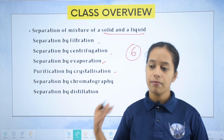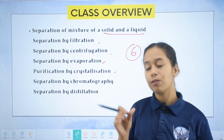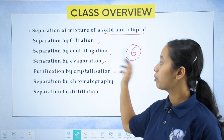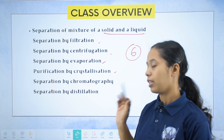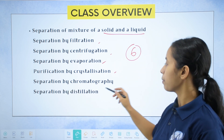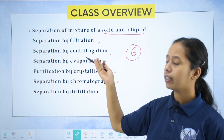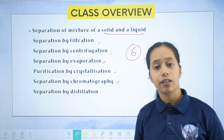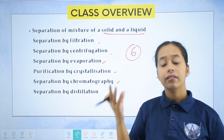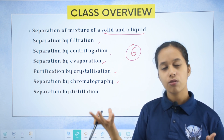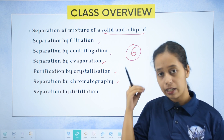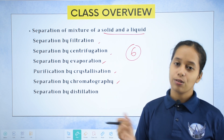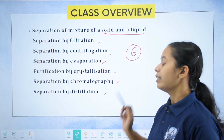For example, common salt - we can separate it using evaporation, but to purify common salt we use crystallization. So those two have a difference. Next we have separation by chromatography. There are many different types of chromatography - paper chromatography, thin layer chromatography. For Class 9 standard, we will study paper chromatography.